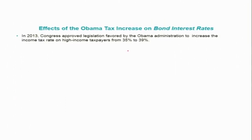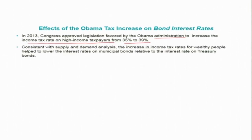Let us look at the effects of Obama's tax increase on bond interest rates in 2013. Congress approved legislation favored by the Obama administration to increase income tax on high-income taxpayers from 35%. Consistent with supply and demand analysis, the increase in income tax rates for wealthy people helped lower the interest rates on municipal bonds relative to treasury bonds, because when income tax increases, demand for municipal bonds rises as people invest more in them, causing municipal bond interest rates to decline compared to treasury bonds.